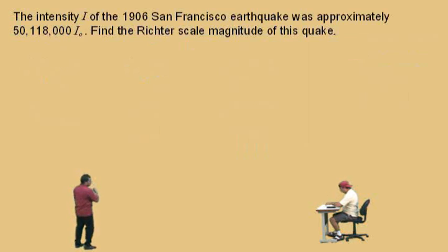Here is an earthquake problem. We're going to talk about the Richter scale. The intensity I of the 1906 San Francisco earthquake was approximately 50,118,000 I-knot. That little I sub-zero means I-knot.